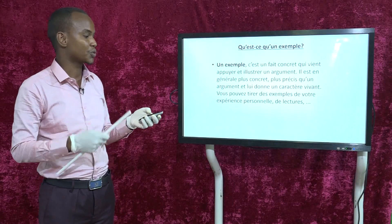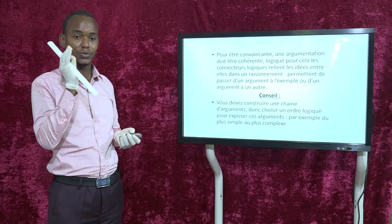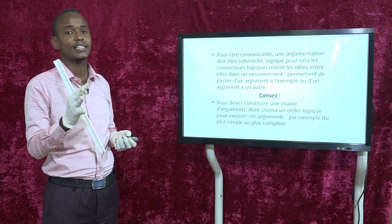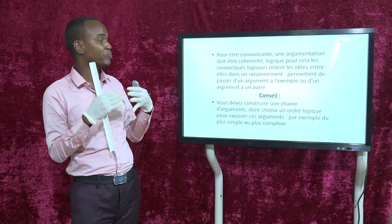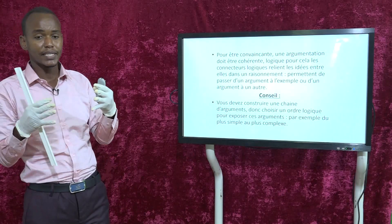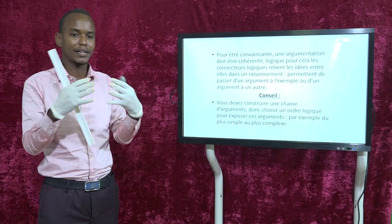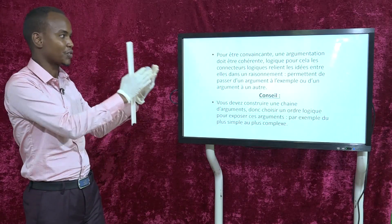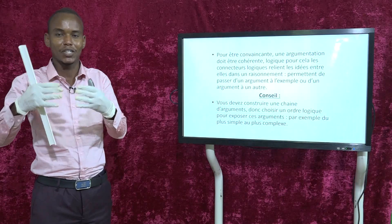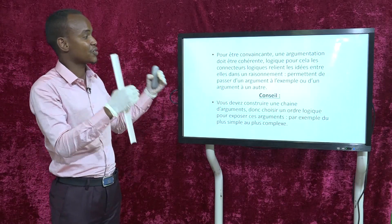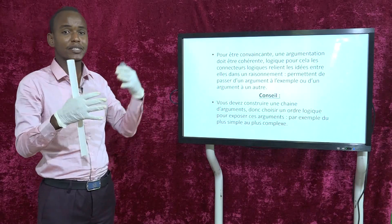Pour être convaincante, une argumentation doit être cohérente et logique. C'est-à-dire que les idées doivent être cohérentes entre elles. Pour cela, les connecteurs logiques relient les idées dans un raisonnement et permettent de passer d'un argument à un exemple, ou d'un argument à un autre. L'élève doit classer ses arguments grâce aux connecteurs logiques — c'est une leçon qui sera prochainement transmise.